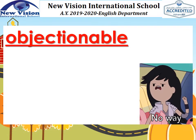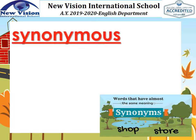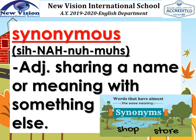For our next word, we have the word objectionable. This is also an adjective which means causing disapproval or distasteful, or simply means saying no. Next word, synonymous. It is an adjective which means sharing a name or meaning with something else — just like the words shop and store. They share the same meaning though they are different words, just like pretty and beautiful. Those are synonymous.